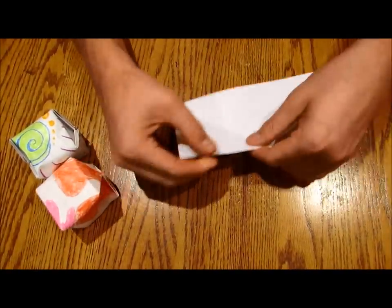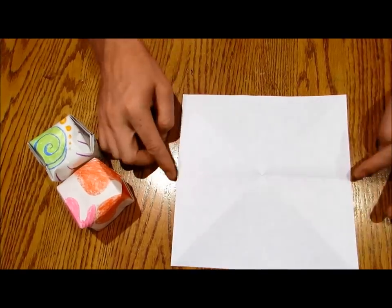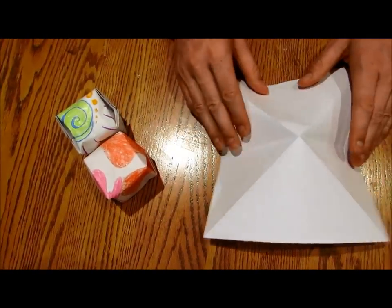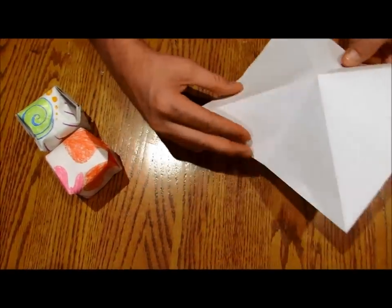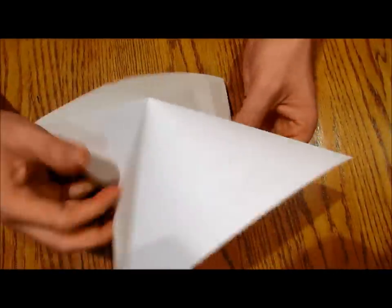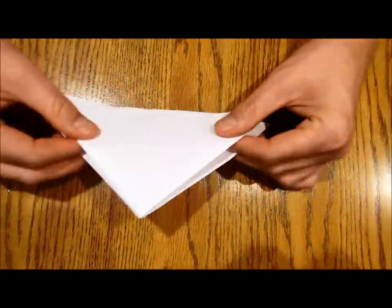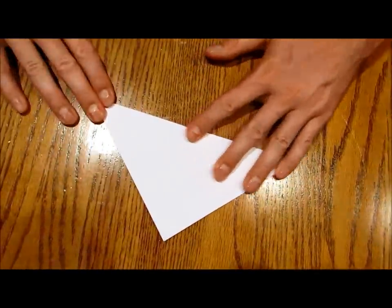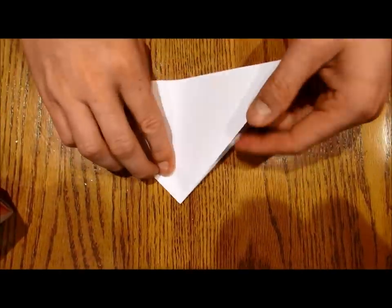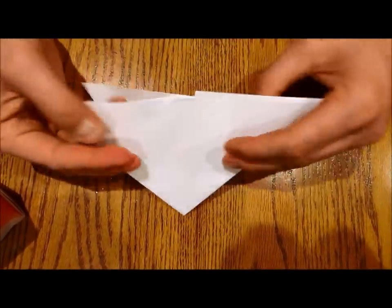Now you're going to take this—this is kind of a tricky part. You're just going to take it and fold the middle creases. They need to go in and you're going to fold it into a triangle just like that, so that you can flip the sides up like this.